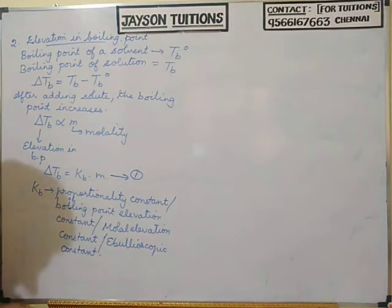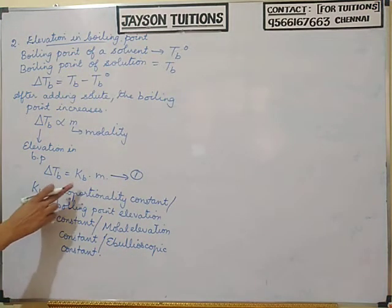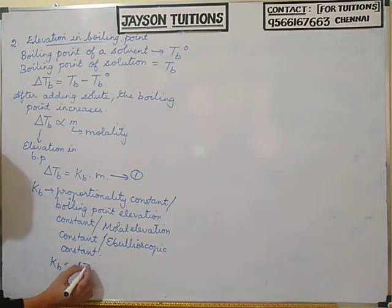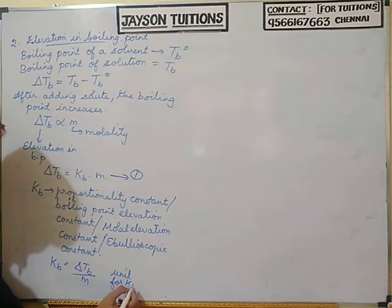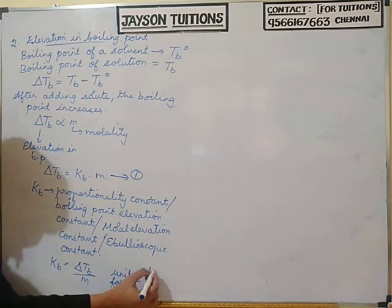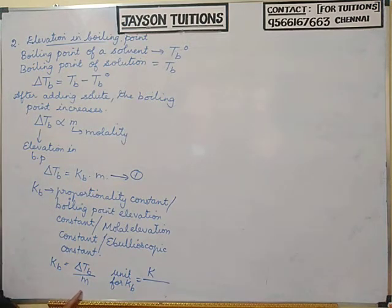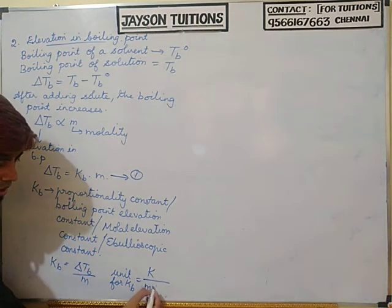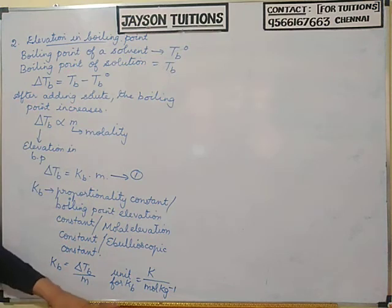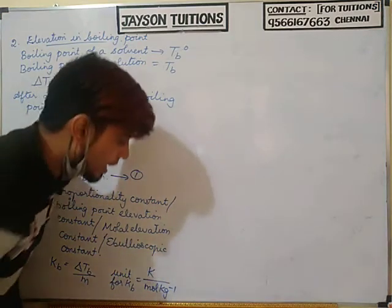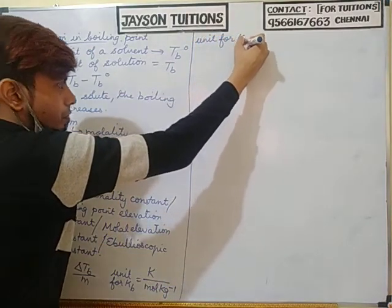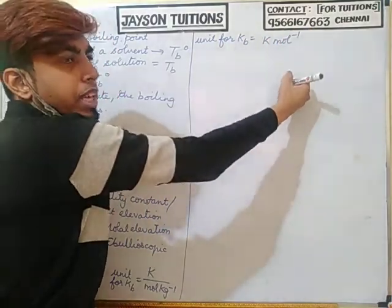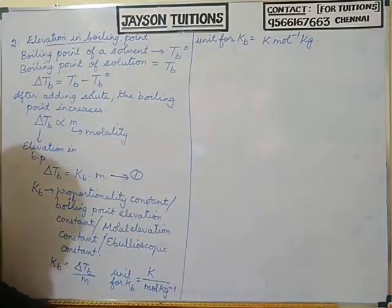This equation is number one. From it, Kb equals delta Tb divided by M. The unit of Kb: delta Tb is temperature in Kelvin, and molality has units of moles per kilogram. When molality comes to the denominator side, the unit for Kb is Kelvin mol inverse kilogram.